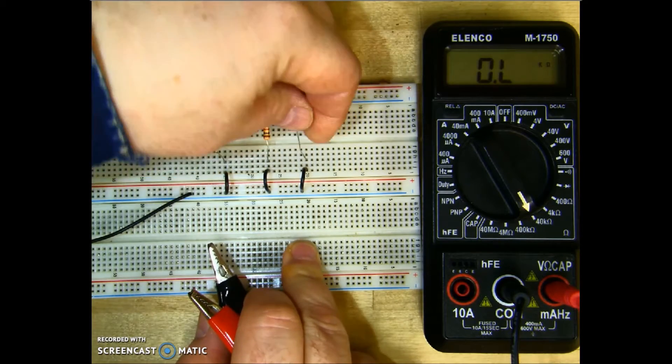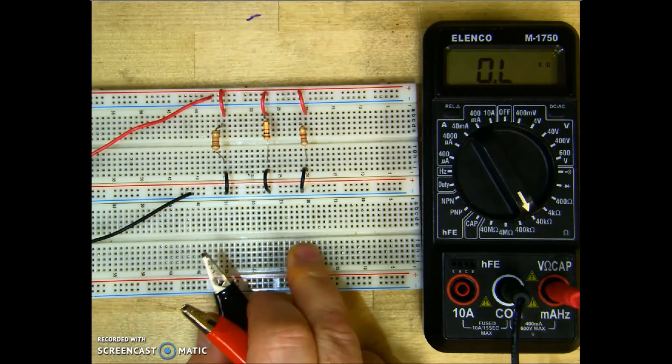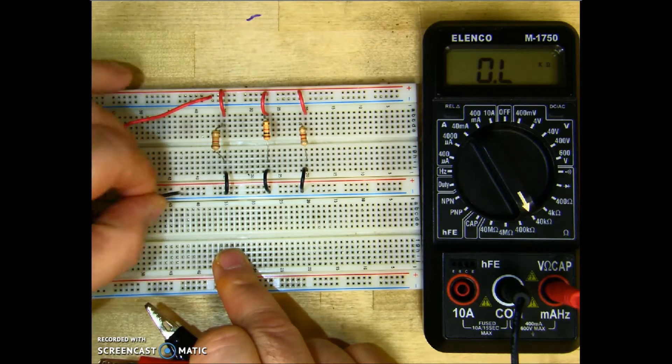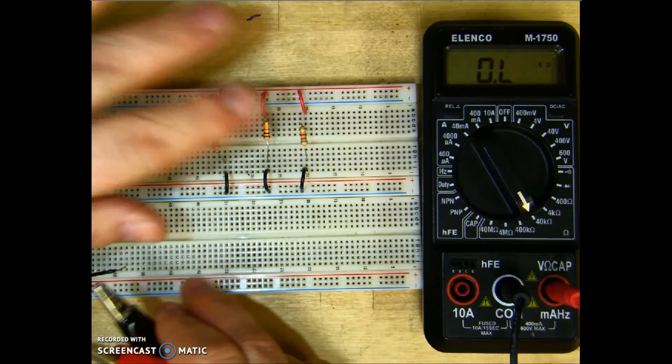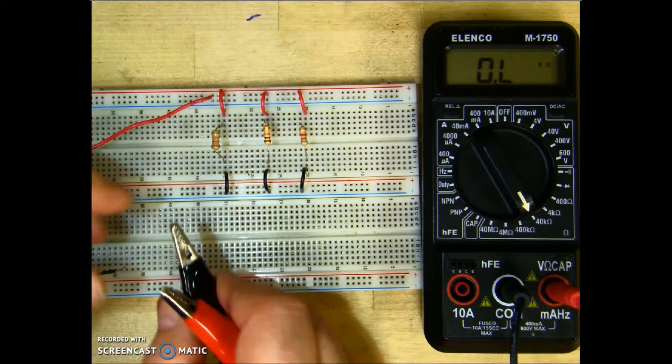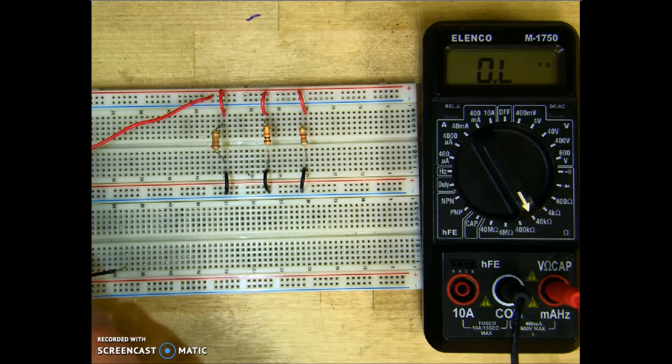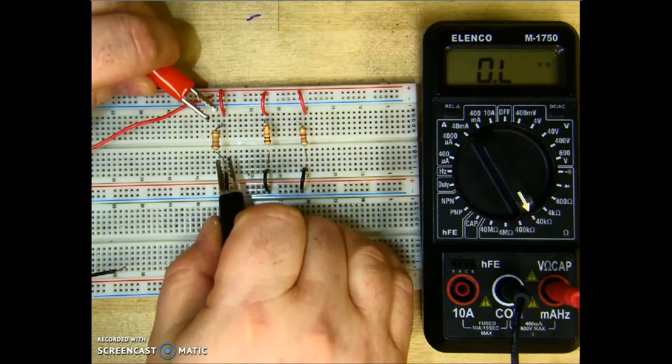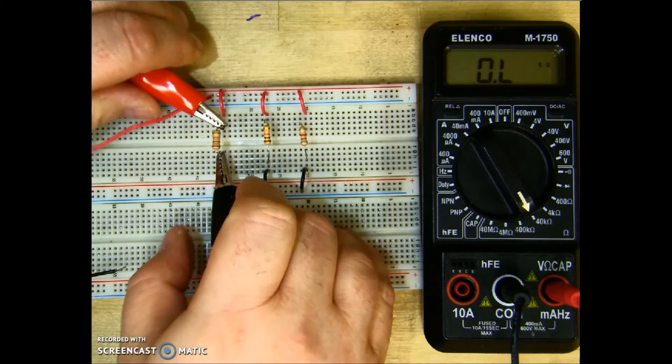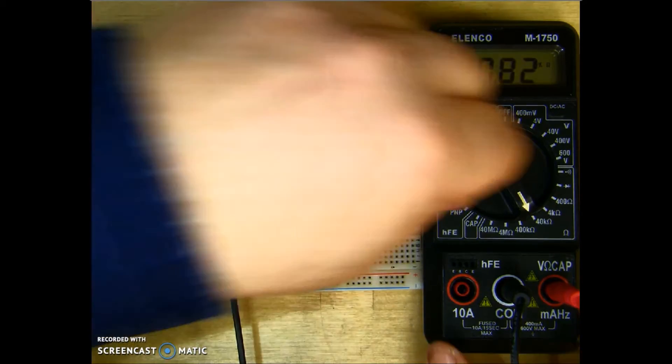Now I'm going to measure R total. So what I'm going to do is take my power supply out of the circuit, and with everything still connected up, I can just go ahead and measure across R1, which will give us the value for the entire circuit.